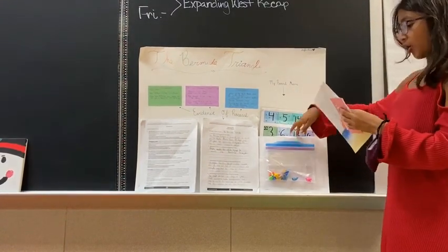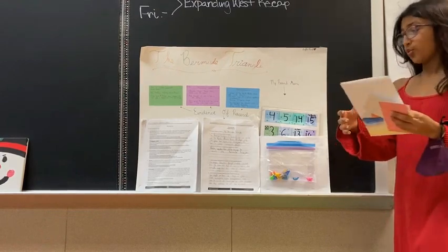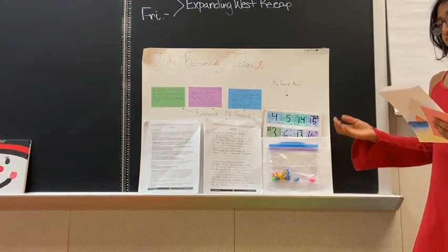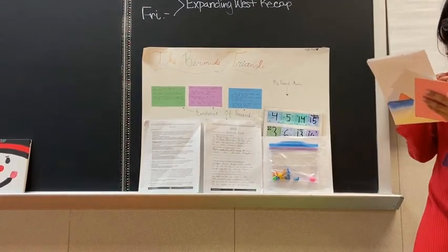And if you get a card with a pink tip, you will roll this dice right here. And if you get it right, you move forward the number that you roll. And if you get it wrong, you move backward the number that you roll.